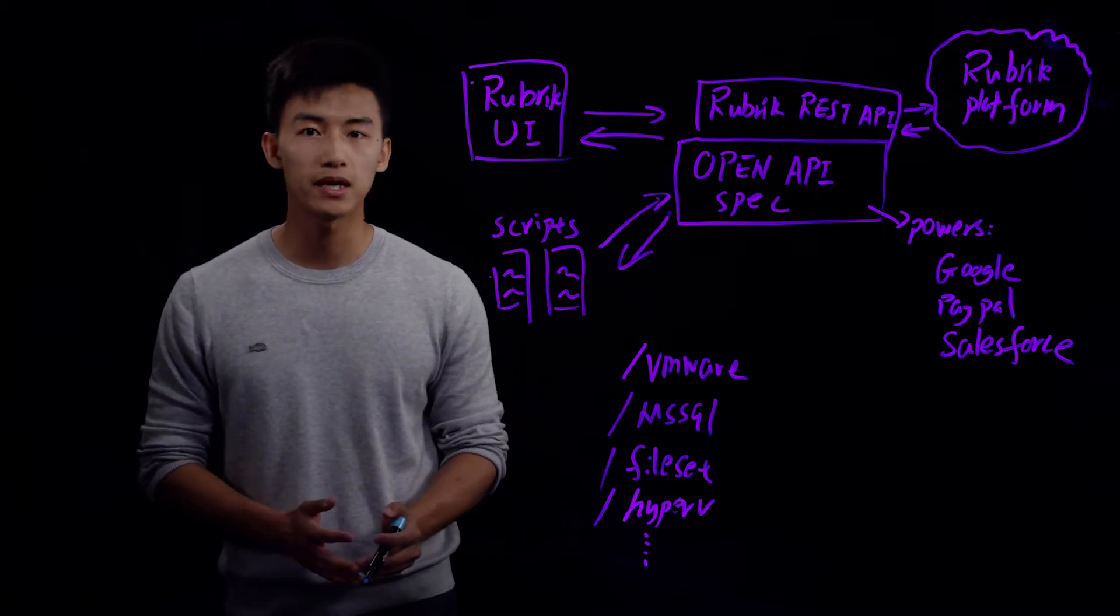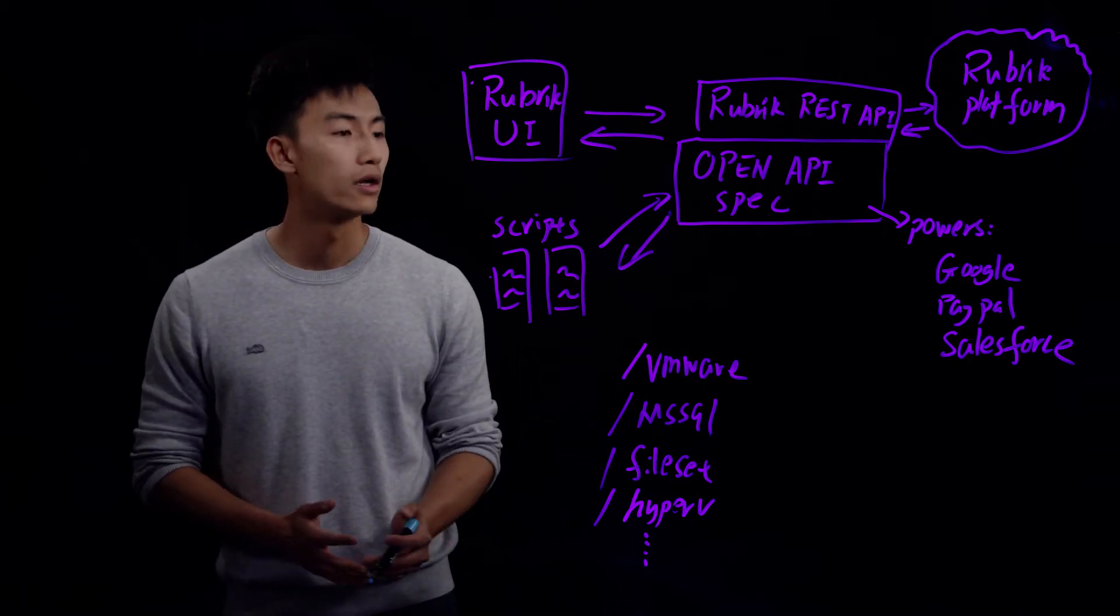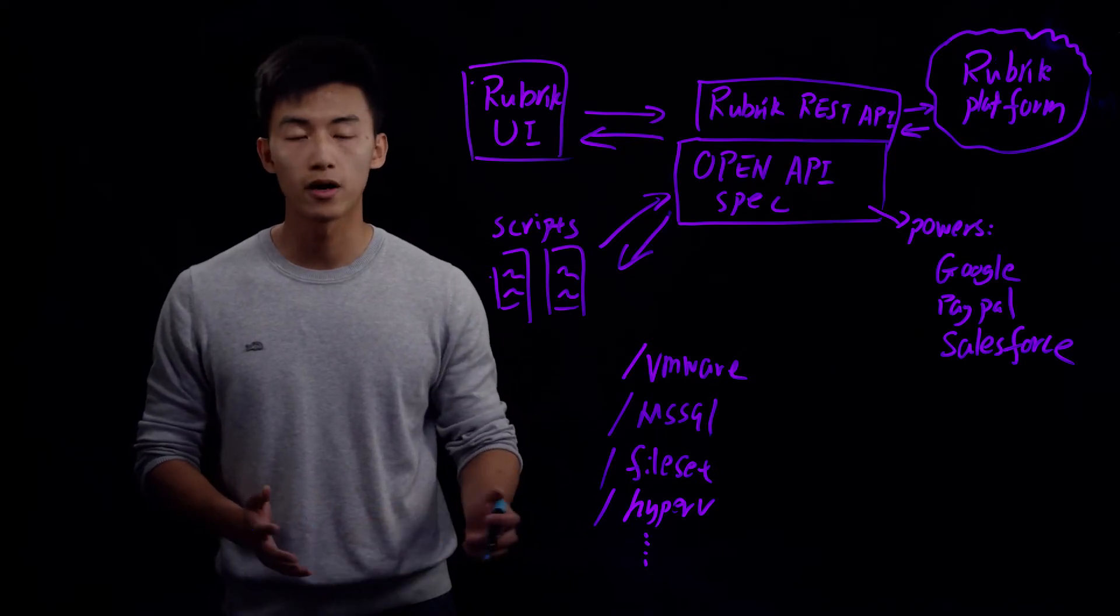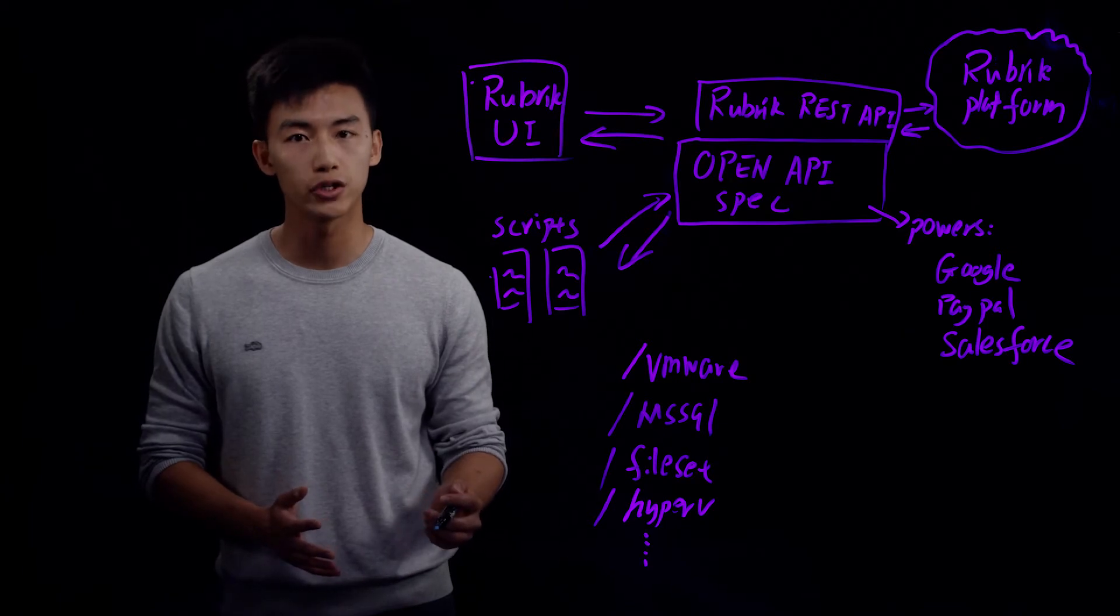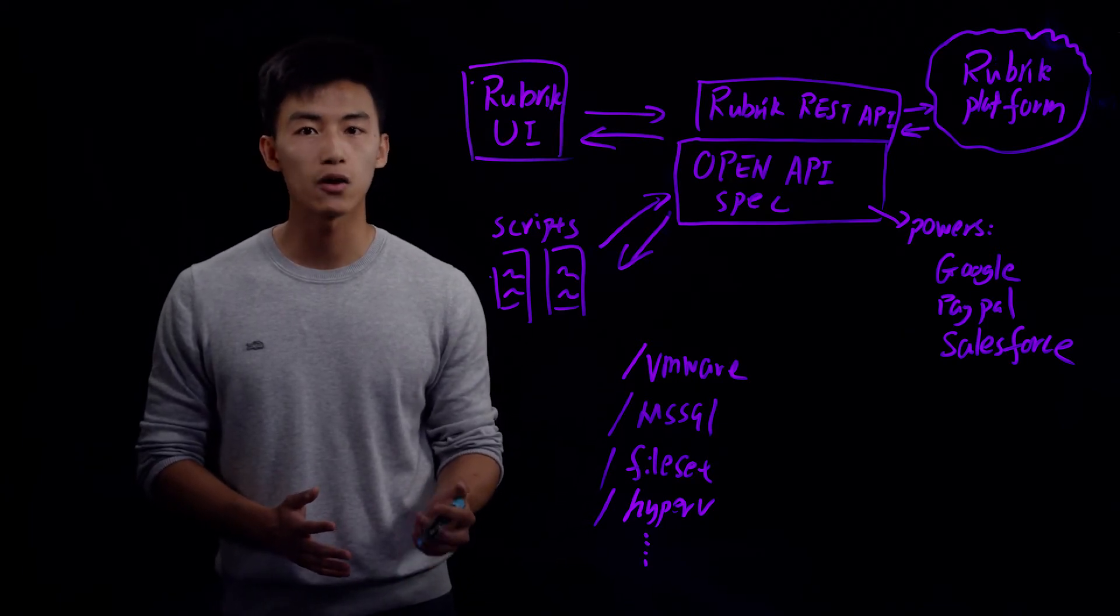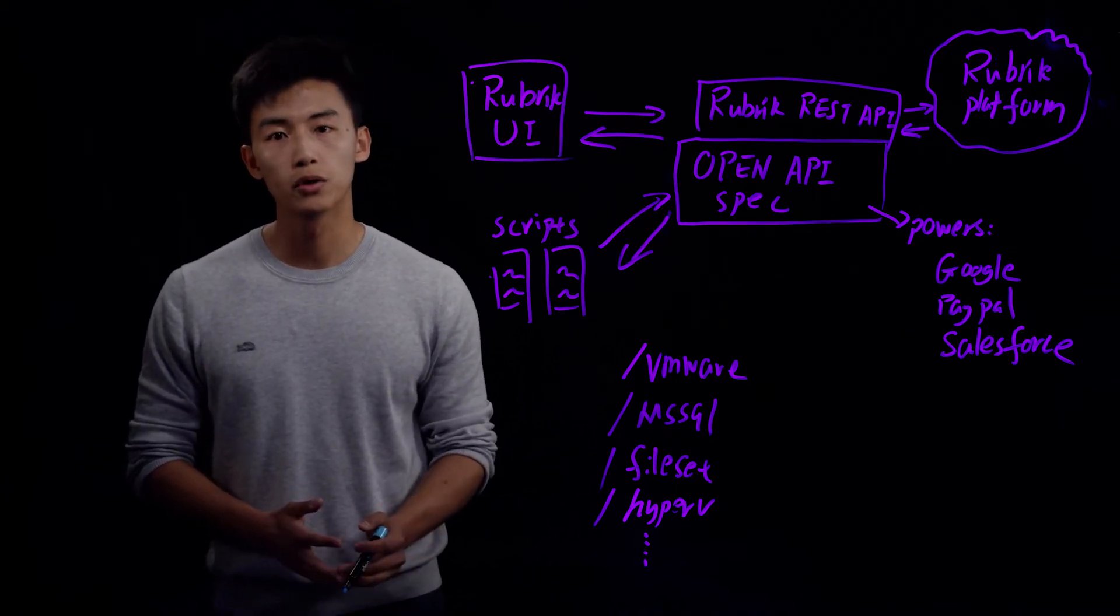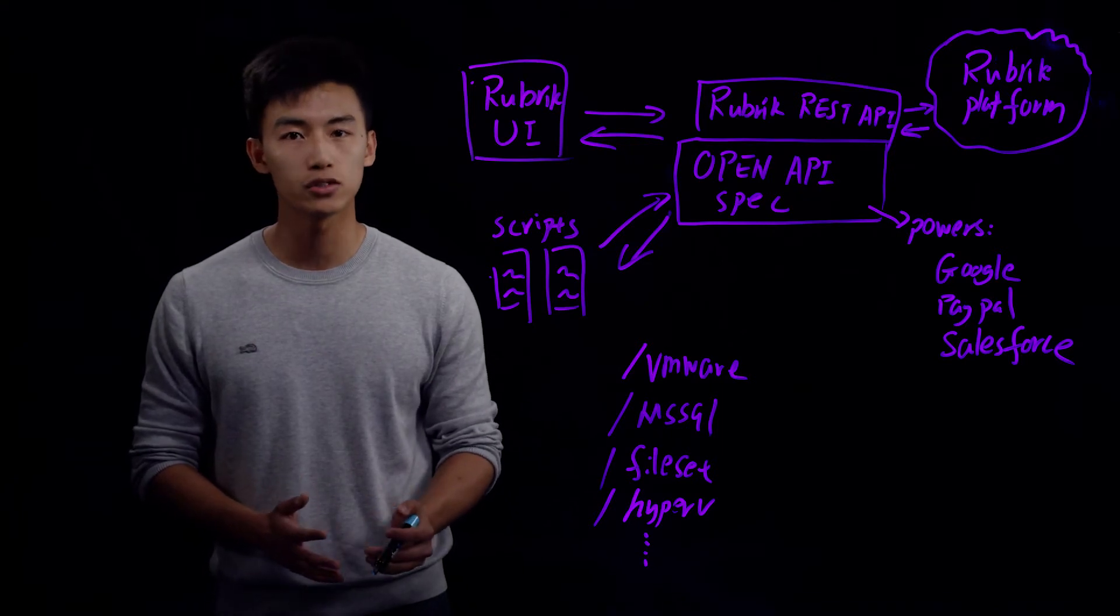That powers APIs from companies like Google, PayPal, and Salesforce, and many more other companies. By using this spec, we make sure that we can leverage the best practices out there in the industry to build truly scalable and easy to use API.